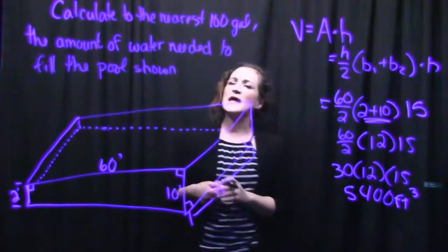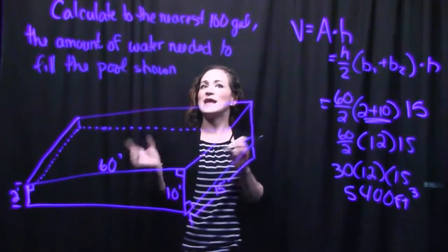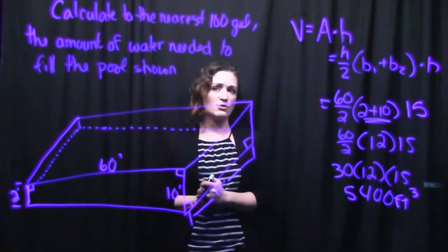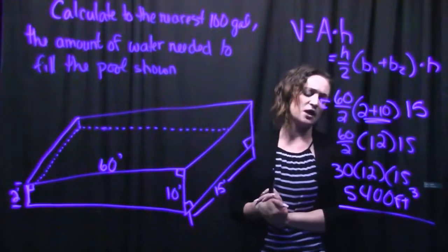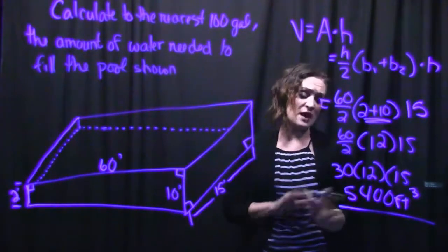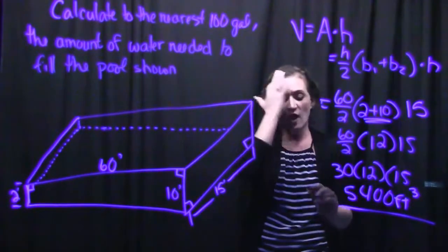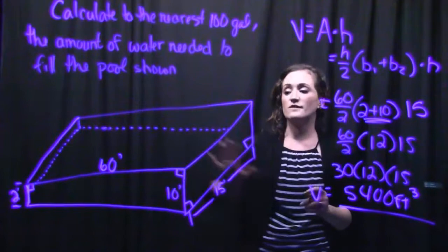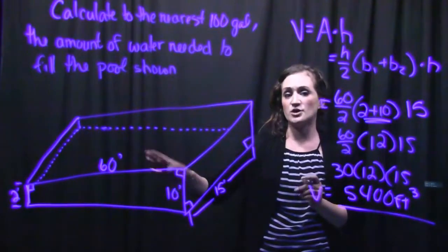So it says calculate to the nearest hundred gallons the amount of water needed. Well, what we calculated here is in cubic feet. So now what we're going to have to do now that we have our answer here for the volume. This does represent our volume. The volume of this pool is 5,400 cubic feet.